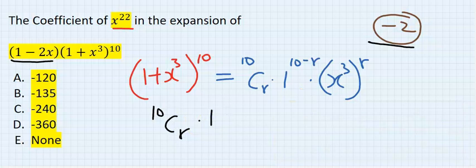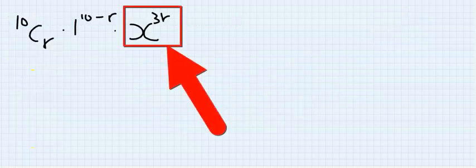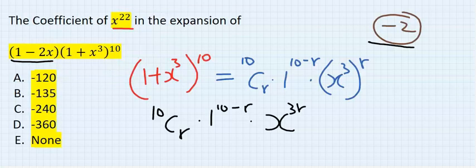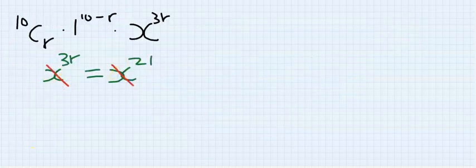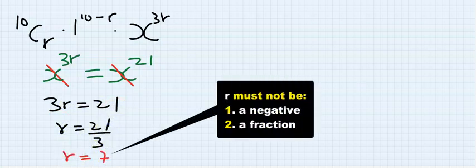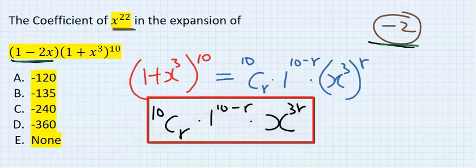This simplifies to 10 combination r times 1 to the power of 10 minus r times x to the power of 3r. Step number 2: equate the exponent to 21, not 22, because we found one of the x coefficients already. So we take x to the power of 3r equal to x to the power of 21, giving us 3r equals 21, so r equals 21 over 3, and r equals 7.